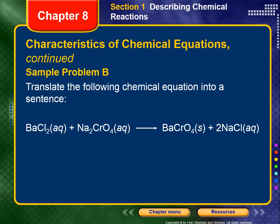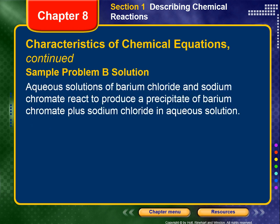Let's do one more sample — going from a formula equation to a sentence. BaCl₂(aq) + Na₂CrO₄(aq) → BaCrO₄(s) + 2NaCl(aq). The sentence would be: aqueous solutions of barium chloride and sodium chromate react to produce a precipitate of barium chromate plus sodium chloride in aqueous solution. It's simply writing down what you would say out loud when reading that formula equation.